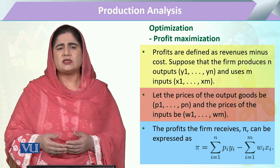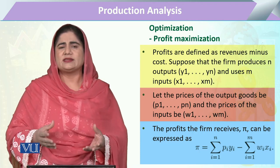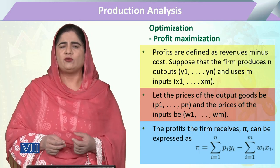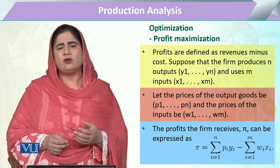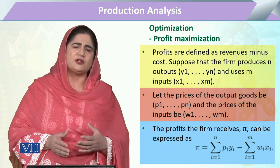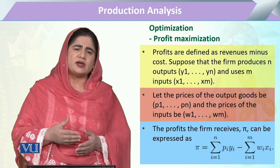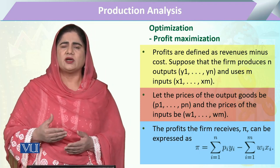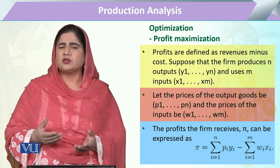These objectives cannot all be attained in a single step. We can say that one objective, if we have to attain it, must have certain conditions, and with respect to those conditions that objective has to be fulfilled. So optimization requires the objective to be fulfilled with respect to a certain condition, constraint, or subjective function.